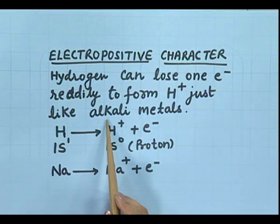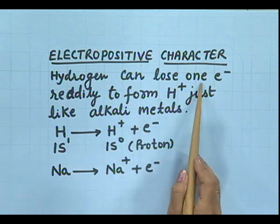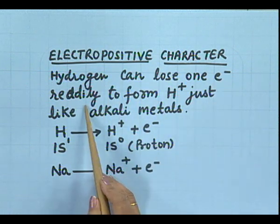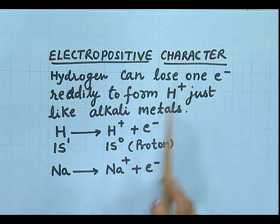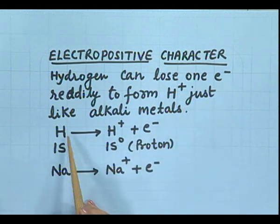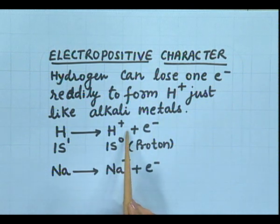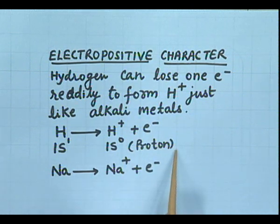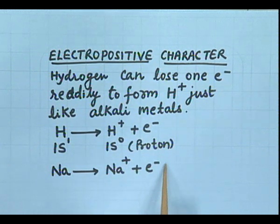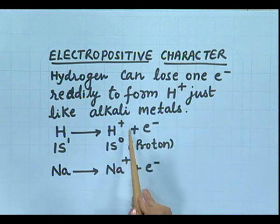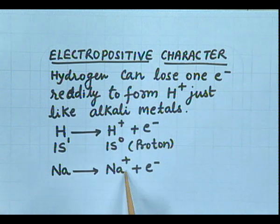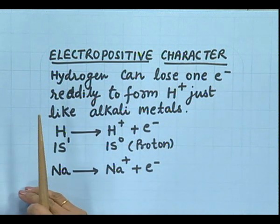Electropositive character: just like alkali metals, hydrogen can also lose one electron readily to form hydrogen ion. Hydrogen loses one electron and a hydrogen ion is formed, which is now a proton. Sodium easily loses its valence electron and is converted into sodium ion. Again, these two — hydrogen and alkali metals — are resembling each other.